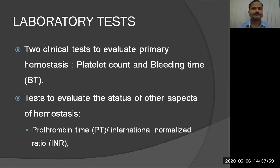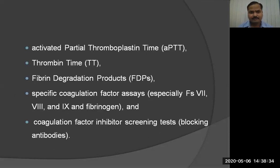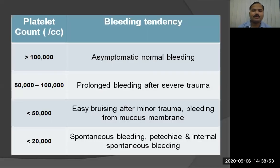When encountering such a patient, laboratory tests are needed for a conclusive diagnosis. The two basic tests to evaluate primary hemostasis are platelet count and bleeding time. Other tests evaluate further aspects of hemostasis: prothrombin time, international normalized ratio (INR), activated partial thromboplastin time (aPTT), thrombin time, fibrin degradation products, specific coagulation factor assays for factors 7, 8, 9, and fibrinogen, and inhibitor screening tests for blocking antibodies.